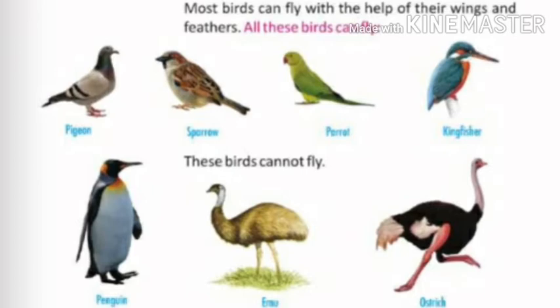There are different types of birds, just like there are different categories of animals — domestic, wild, pet. Most birds can fly with the help of their wings and feathers. Birds like pigeon, sparrow, parrot, kingfisher, etc. can fly.